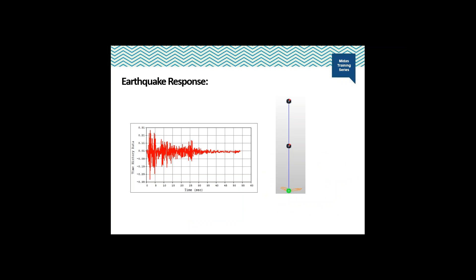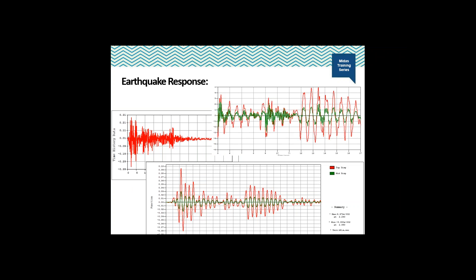A periodic case has been studied so far. A similar application is possible for an earthquake time history function applied to a multiple-degree-of-freedom system as well. The difference is the loading would be transient rather than periodic. For the given earthquake time history, the acceleration and displacement at different times can be obtained by the modal superposition method. The acceleration, displacement, and forcing function plots shown are for the El Centro earthquake applied to the MDOF system shown earlier. Hope you enjoyed the session — thank you for your attention.